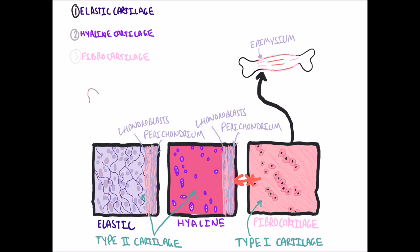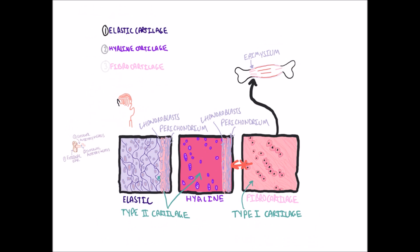Elastic cartilage is found in the external ear, external auditory meatus, internal auditory meatus, and epiglottis.